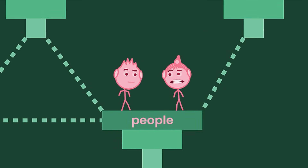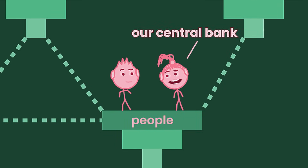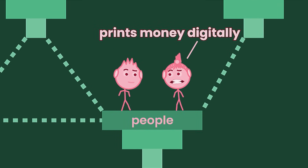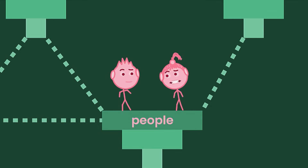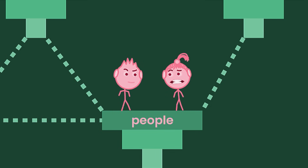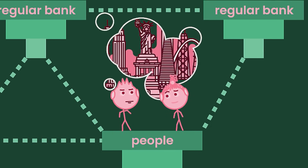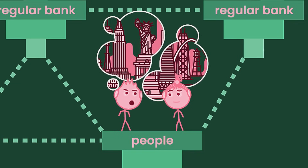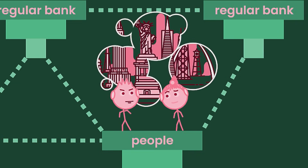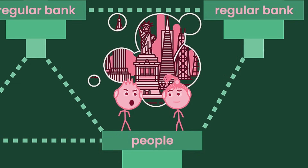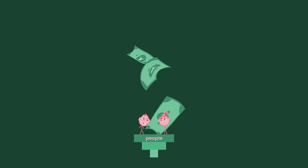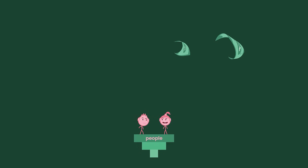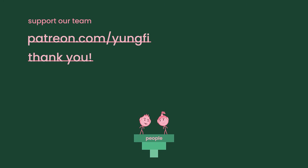Okay, I think I get it now. Our central bank prints money digitally by purchasing debt from sellers. If they didn't do this, the economy would do poorly. Yes, but don't forget the unintended consequences of printing money. First, it is making the debt problem much worse for a later date. Second, printing money causes inflation. Is inflation bad? I covered that in another video — click the end screen to check it out.